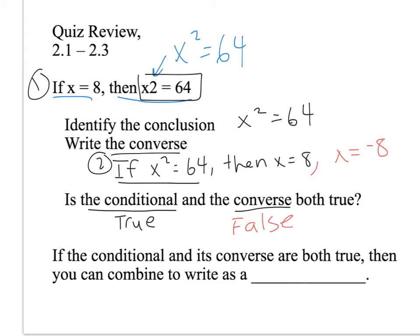Therefore, are the conditional and the converse both true? No, they're both not true. Since they're both not true, we can't write it as a biconditional. If the conditional and its converse are both true, then you can combine them to write a biconditional statement.